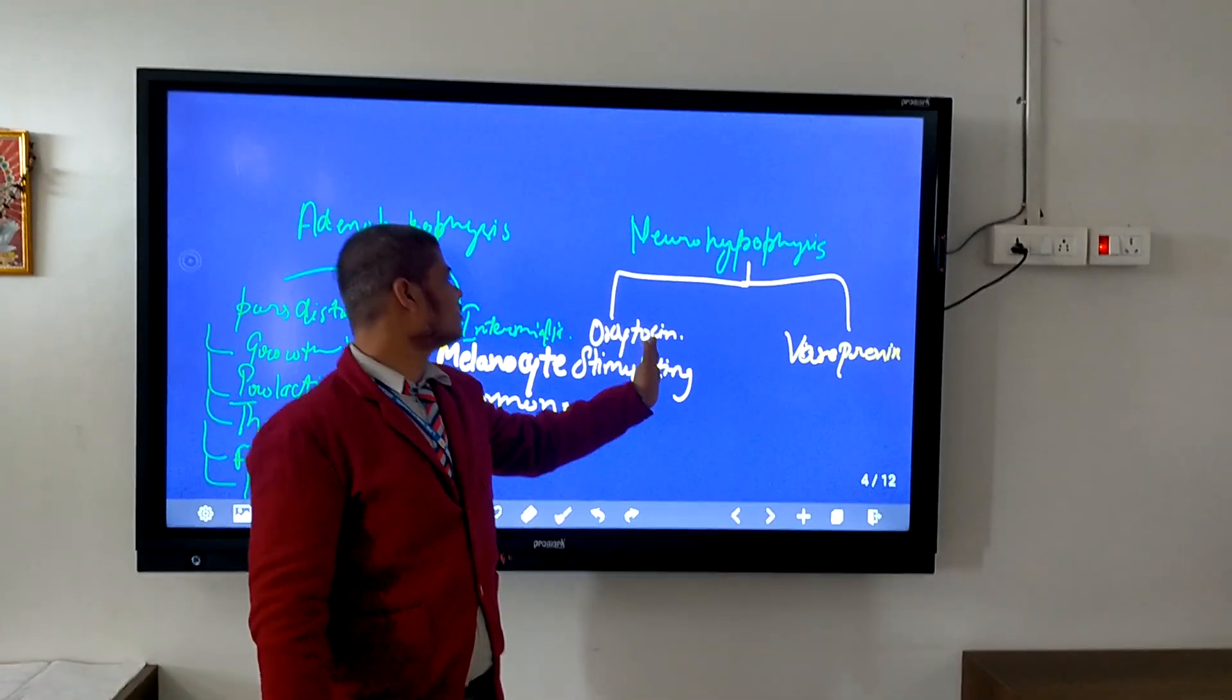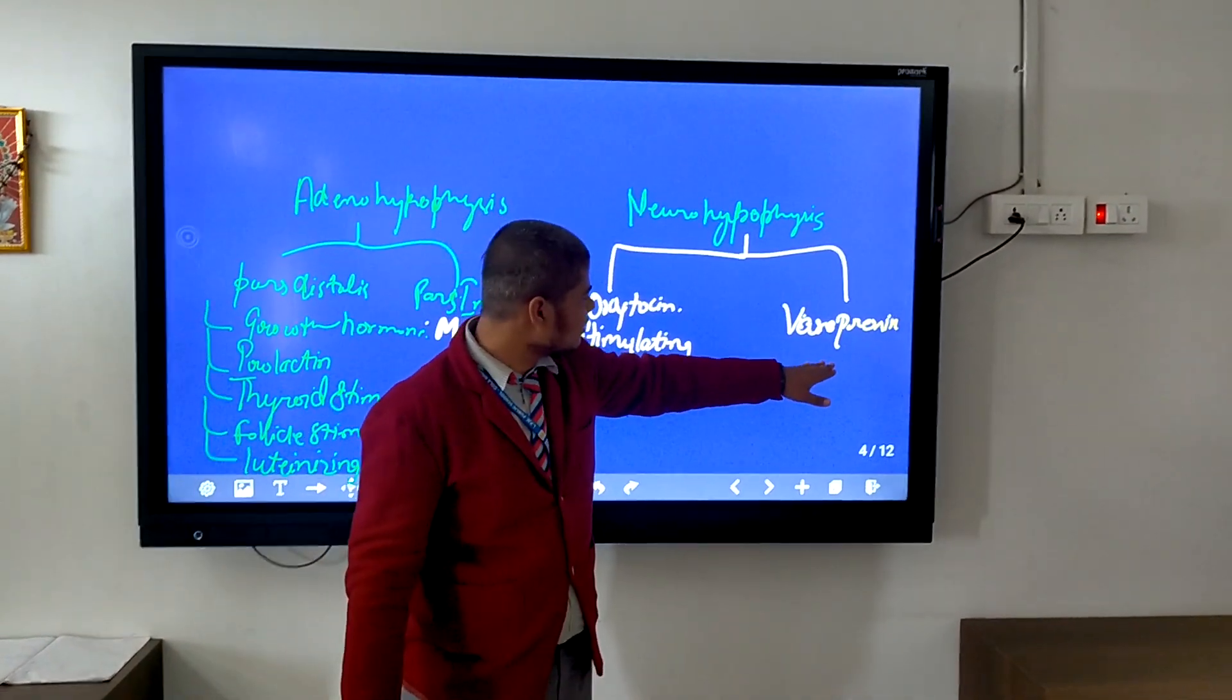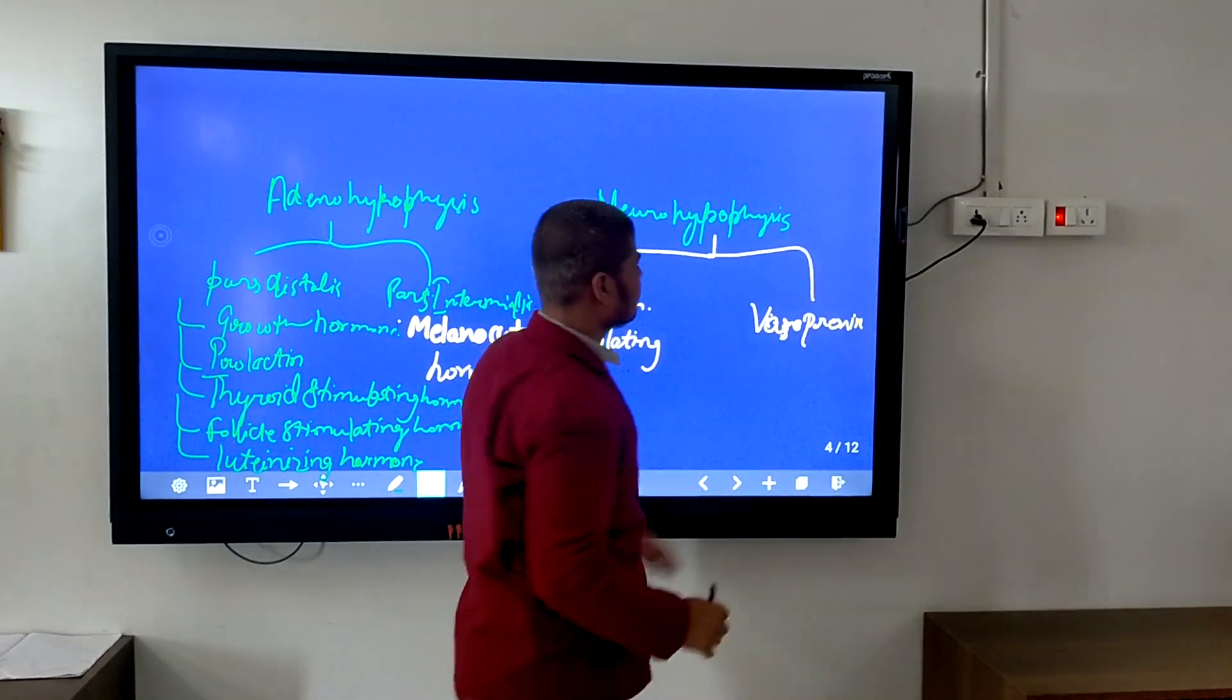Now neurohypophysis secretes two hormones. First one is oxytocin, and the second one is vasopressin.